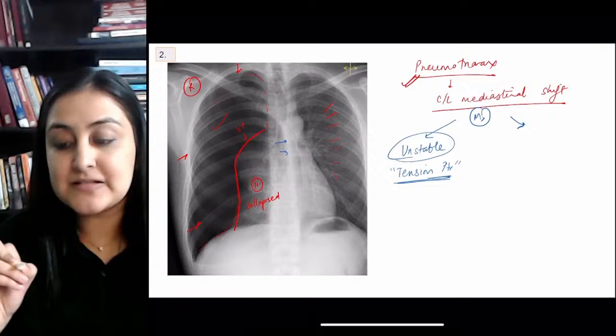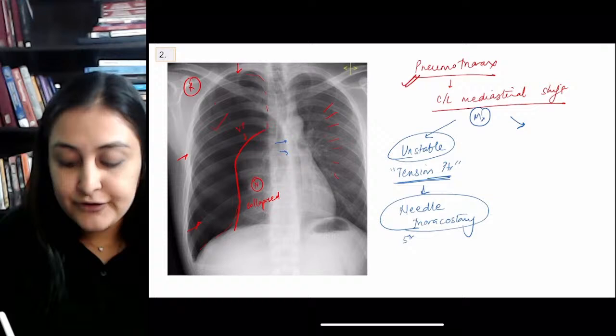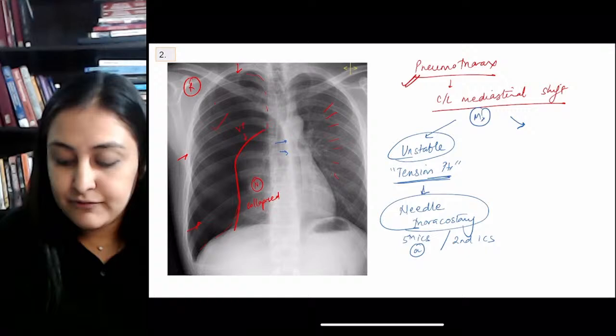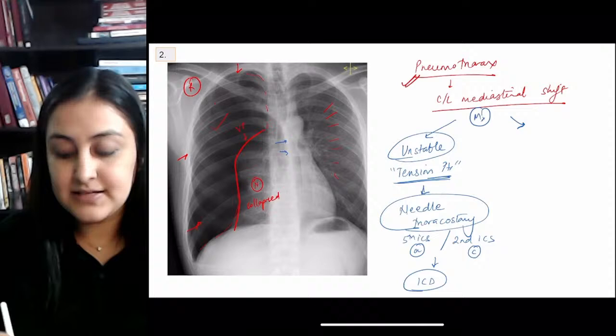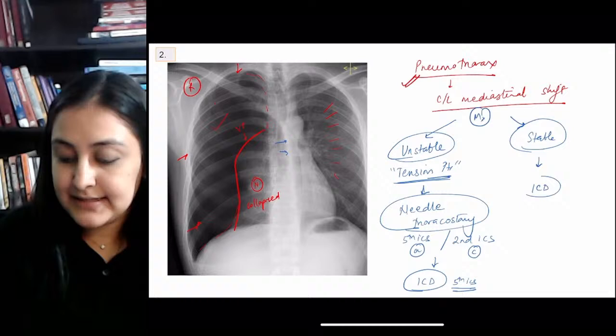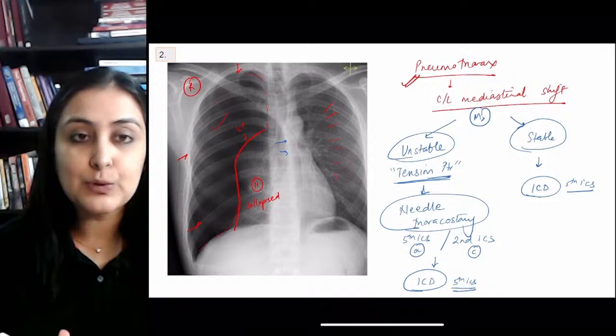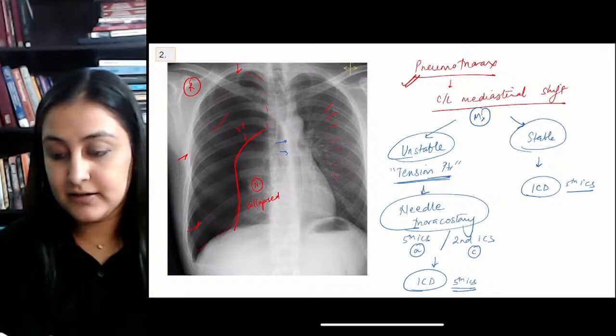For management: if the patient is unstable, do emergent needle thoracostomy — needle in the 5th intercostal space for adults, 2nd intercostal space for children — followed by ICD insertion in the 5th intercostal space in the triangle of safety. If the patient is stable, go directly to ICD placement in the 5th intercostal space. Thoracotomy is a surgical procedure indicated for hemothorax with significant bleeding, not for simple pneumothorax.